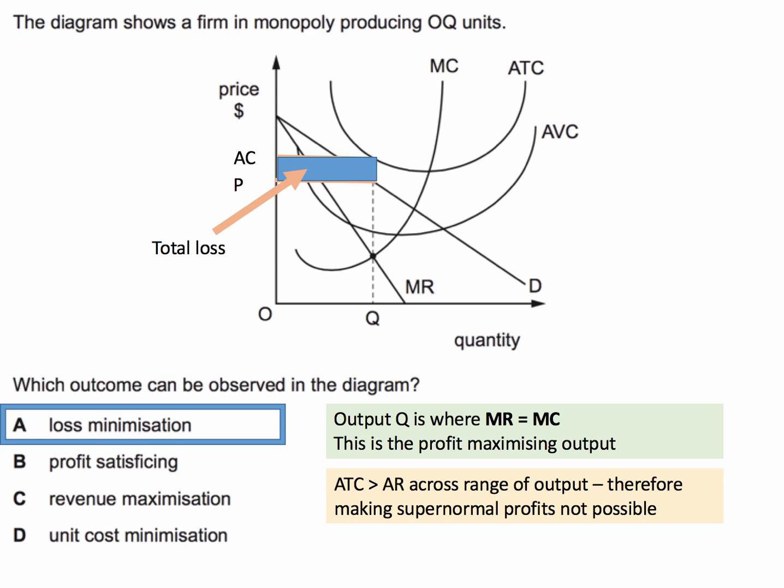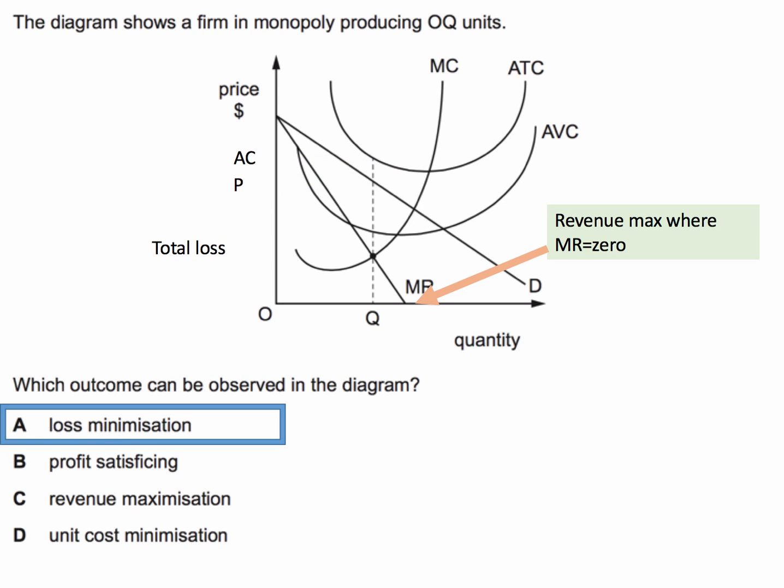Let's just quickly check the other three answers. They can't make a profit, so even satisficing isn't relevant here, so B is not right. A business maximises total revenue where marginal revenue is zero, which is shown in the diagram — that would be at a higher output than Q. And unit cost minimisation is when the average total cost curve is at a minimum.